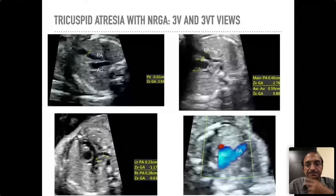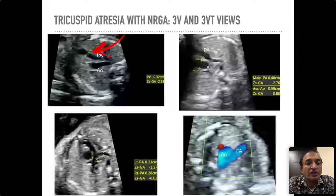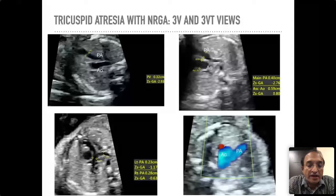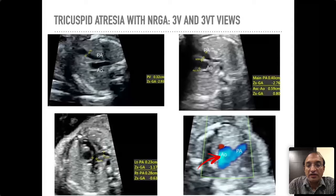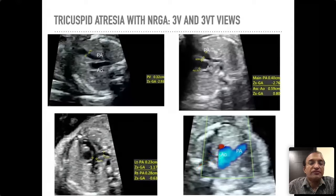Let us see examples of both. This is tricuspid atresia with normally related great arteries — I am showing the three-vessel view. You can see that the PA in comparison to the aorta is definitely smaller, the two branch pulmonary arteries are also smaller, and in the bottom right you can see the three-vessel tracheal view with color. The aorta is big while the PA is smaller, obviously suggesting pulmonary stenosis.